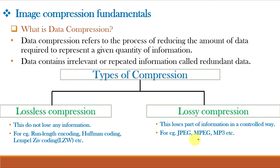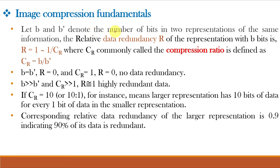Our eyes cannot distinguish subtle changes, so lossy data is acceptable. Decompression is the reverse process where the redundant parts are put back into the representation to restore it to its initial form. Let B and B' denote the number of bits in two representations of the same information, where B is the uncompressed data and B' is the compressed data. The relative data redundancy R is given by R = 1 - 1/CR, where CR is the compression ratio defined as CR = B / B'. If B equals B', CR equals 1 and R equals 0, indicating no data redundancy.